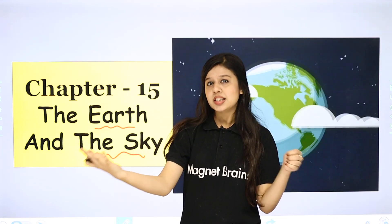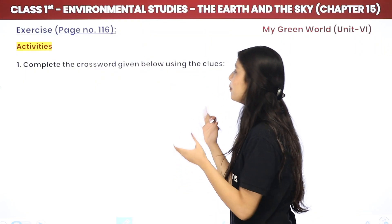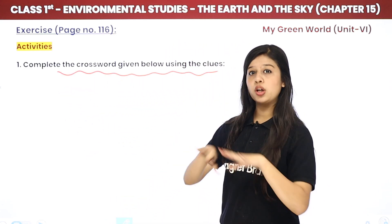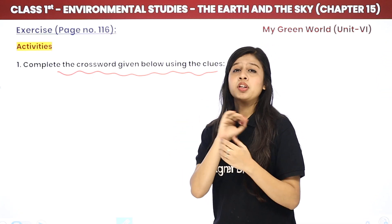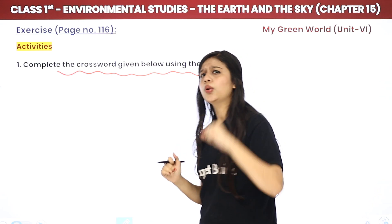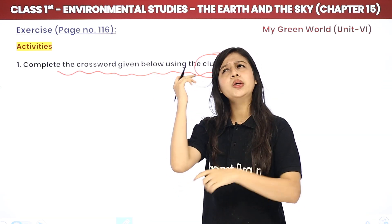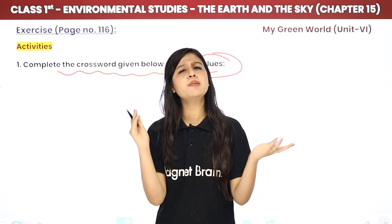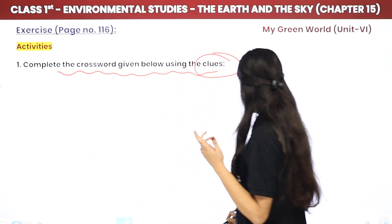These are the activities for you. Chaliye start karte hain humari activities related to this chapter. Activity number one is: complete the crossword given below using the clues. Aapko ek crossword mein dikhaungi — woh aapko complete karni hai. Crossword mein kuch alphabets diye hote hain aur hame guess karna hota hai ki ye word kaun sa hai, aur hint ke liye clues bhi diye jayenge.